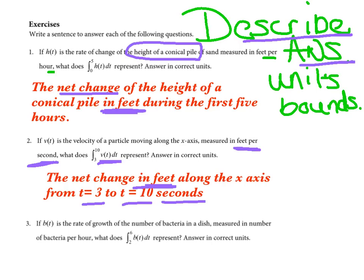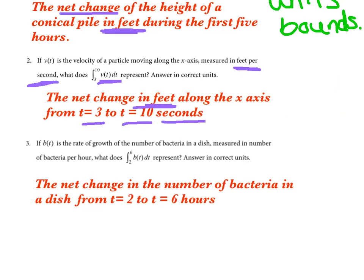One more try here. So pause it, try it on your own. So I've got the net change in, b of t was bacteria per hour. So I'm getting the net change in the number of bacteria from, in a dish, from t equals two to t equals six hours. So hopefully you're feeling better with those sentences.